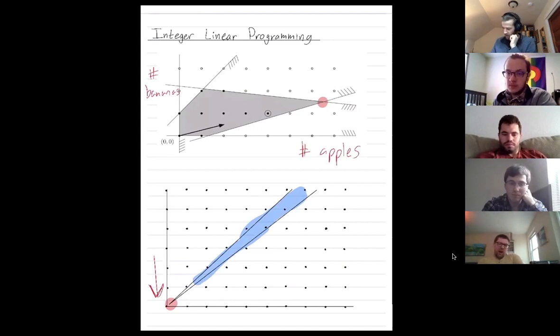The optimal integer solution is right here. That's the integer solution inside the feasible region. They're pretty far away from each other. And so you can't just find the optimal non-integer solution and then round to one of these nearby integer points. It doesn't always work.